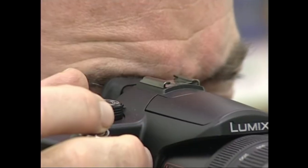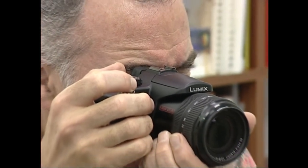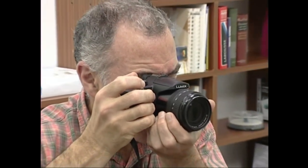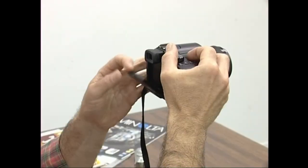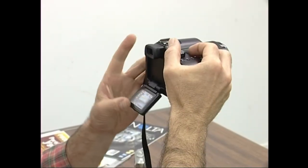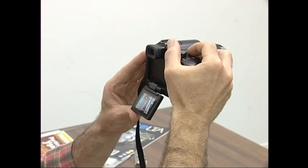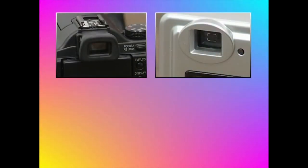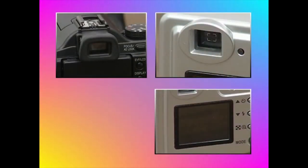Argazki kameraren LCD ikusgailuak oso erabilgarriak dira, baina gaur eguneko argazki kamera digital batek bi eratako ikusgailuak izan behar ditu: LCD pantaila txikia eta ikusgailu okularra.